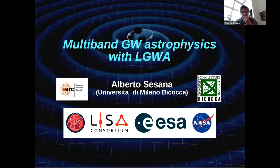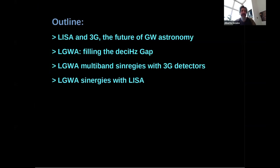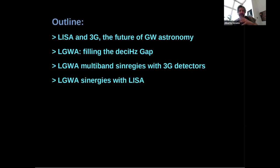I will frame this in the context of the future of gravitational wave detectors, mostly talking about LISA and third-generation detectors — LISA in space and 3G detectors on the ground — setting the stage for the future of GW astronomy, and then talk about how LGWA is going to fill the frequency gap between 3G and LISA, and the possible multi-band synergies with both.